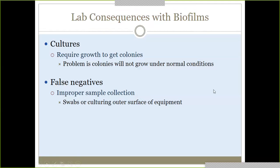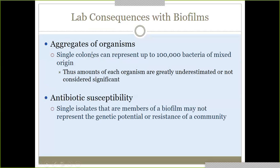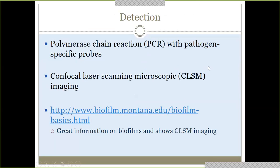Biofilm cultures are hard to get — it's hard to get colonies because it's a community of colonies, and they don't always want to grow normally. You might see a false negative because they won't grow the right way. When you do get colonies to grow, they can represent up to 100,000 mixed bacteria, not just one type, so susceptibility testing isn't really accurate. The best way, like everything in microbiology, is molecular PCR testing. There's also confocal laser scanning microscopic imaging, which visibly sees the biofilm in existence — the best way to detect it.